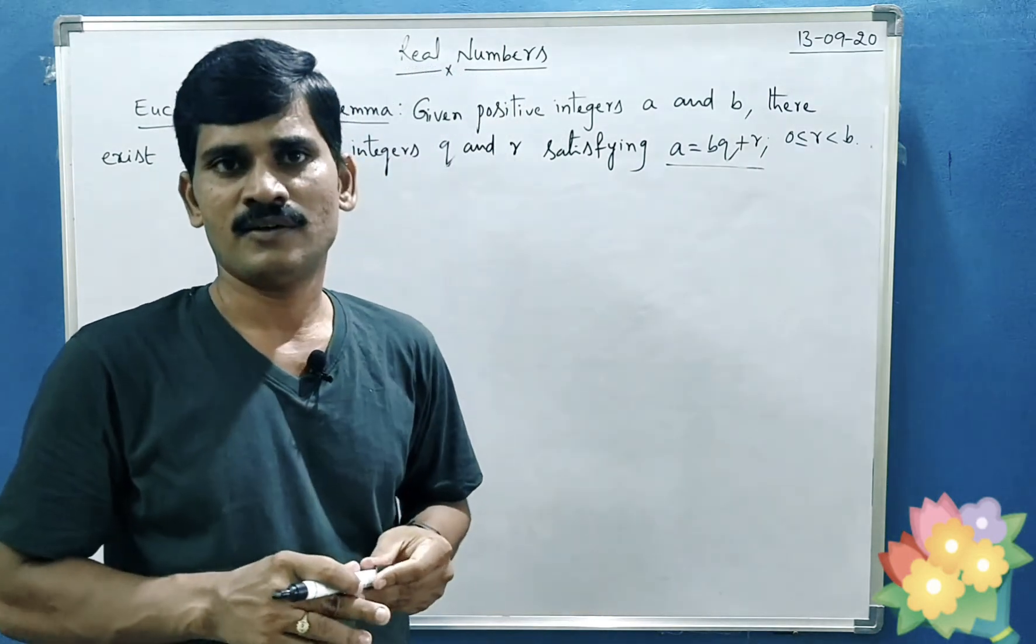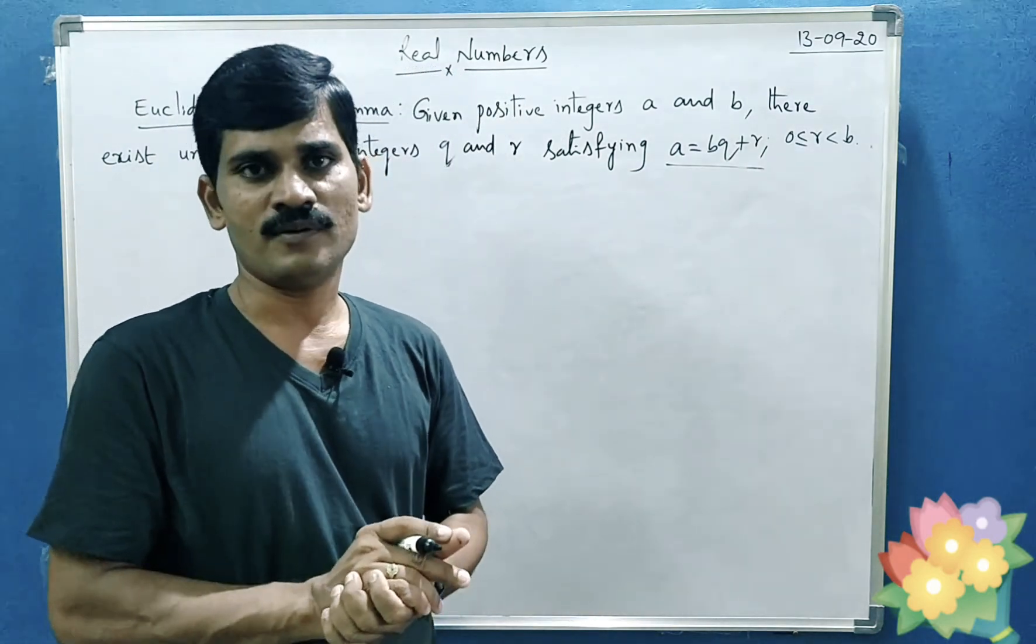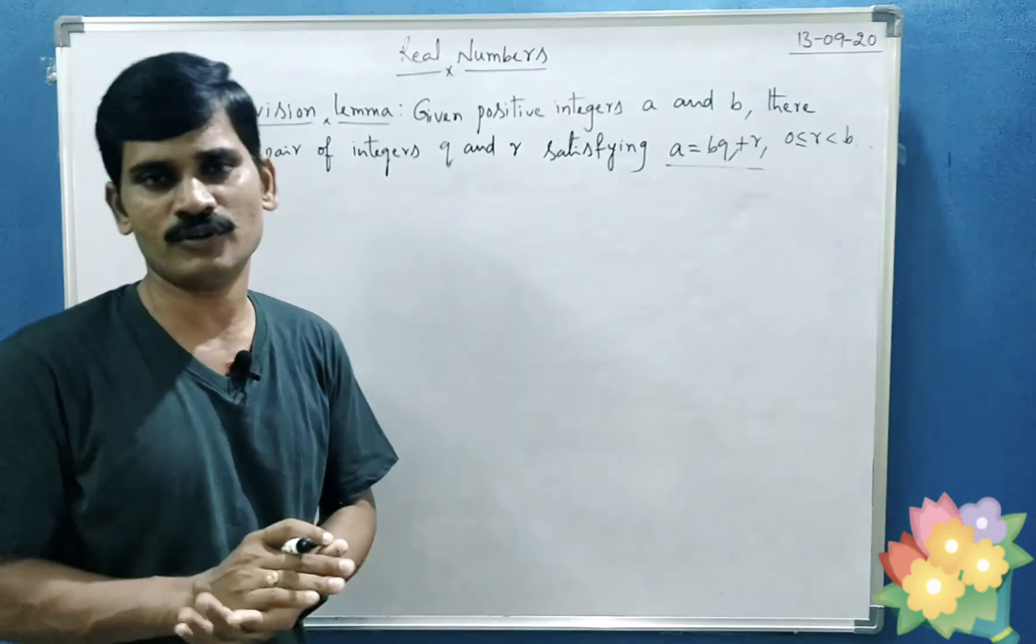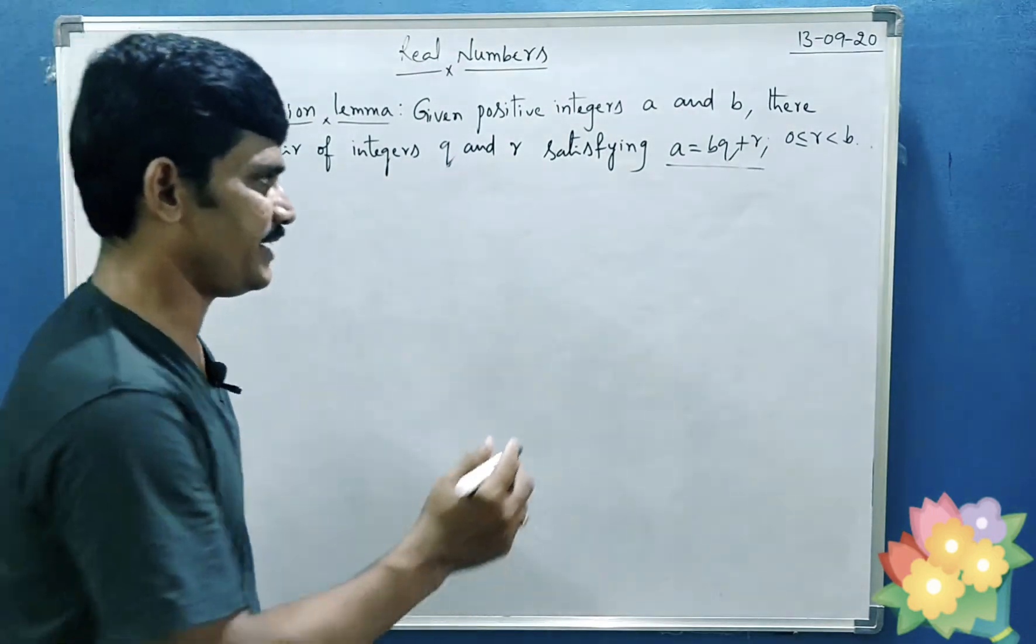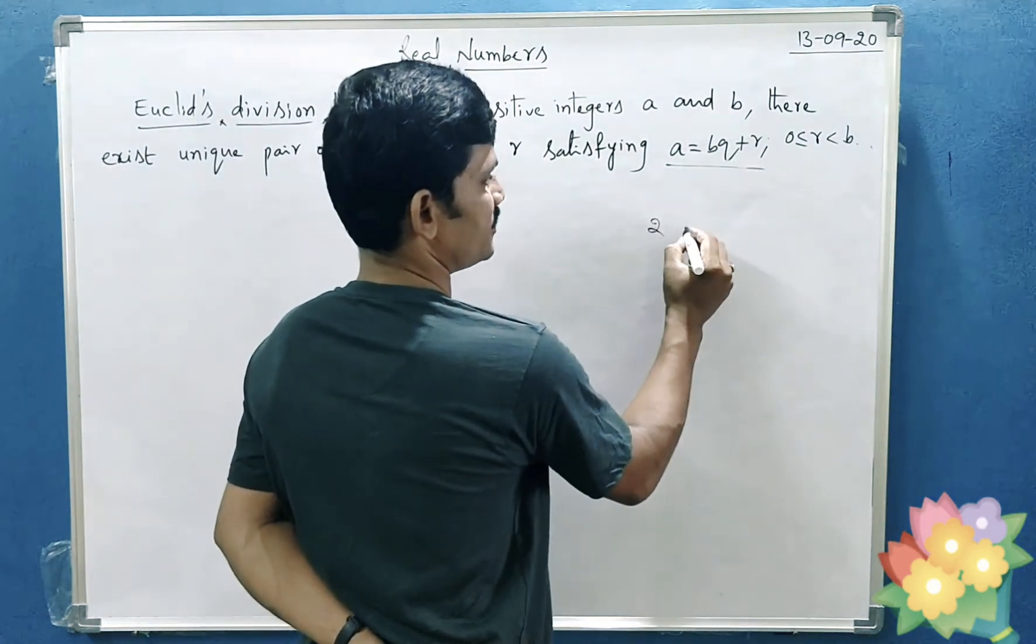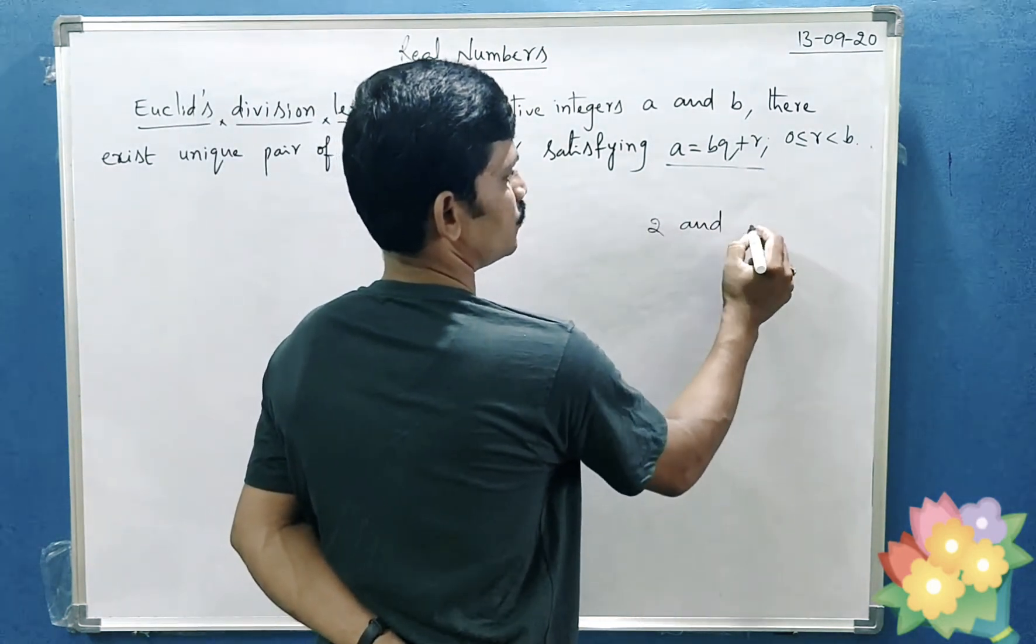To understand better, if we take an example, we can easily understand what is Euclid's division algorithm for any two positive integers. Let me take two positive integers 2 and 7.